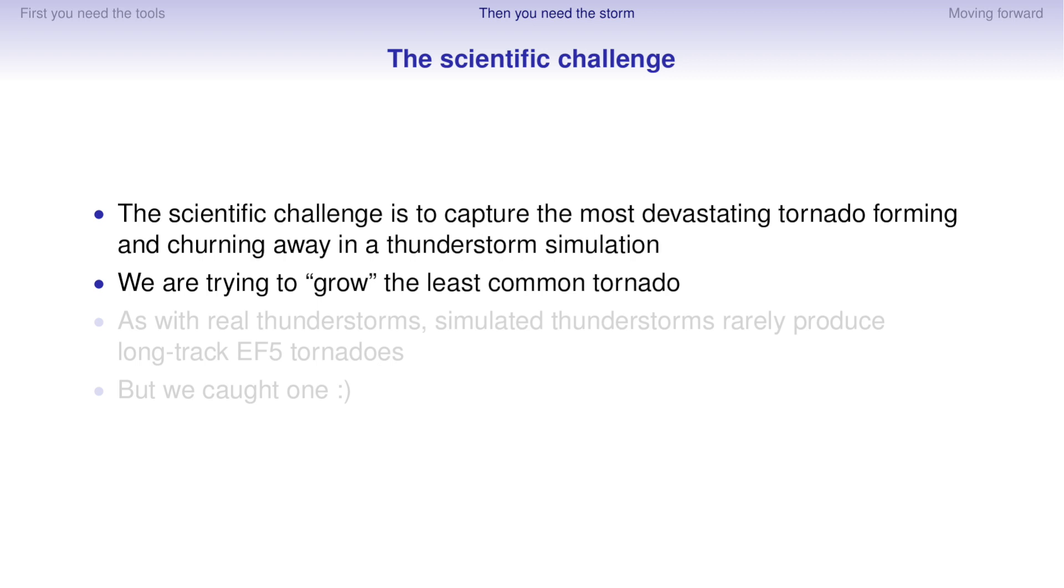So the scientific challenge to this problem, we're trying to capture the most devastating and rare tornado that actually forms in any thunderstorm and have it go on for a long time, a long-track EF-5, as it's called. So we're trying to grow the least common tornado, the most devastating tornado. And as with real thunderstorms, simulated thunderstorms rarely produce these things. And it was not a foregone conclusion that we would actually get one, even though all our tools were in place, but we did, thankfully.